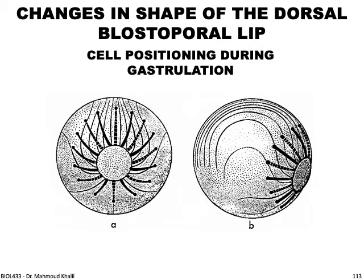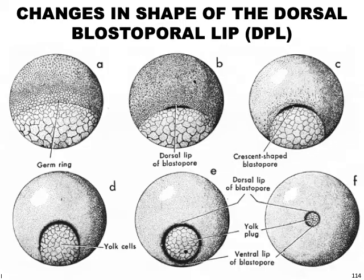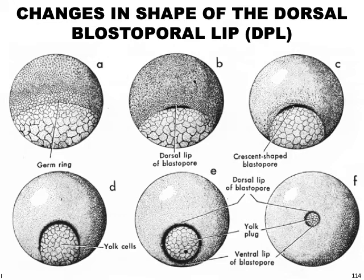The dorsal blastoporal lip migrates laterally and combines with the ventral blastoporal lip to form a circle — the yolk plug. Dark lines represent migration from the outside that becomes internalized, while thin lines represent migration from the inside. In stage A, the end of blastula is shown; at B, the dorsal lip of the blastopore appears; at C, this dorsal lip starts to migrate laterally and the yolk plug is appearing at the ventral region; at D, the dorsal blastoporal lip migrates further laterally and yolk cells start to become smaller as they are internalized.